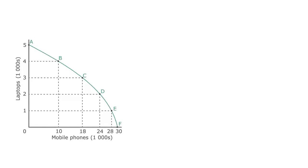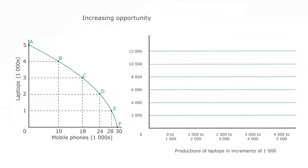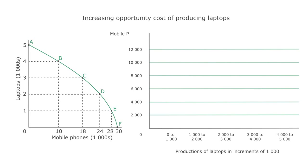If you take a closer look at the opportunity cost of producing laptops, what you will notice is that the opportunity cost increases as more laptops are produced. The opportunity cost of increasing the production of laptops from zero to one thousand is two thousand mobile phones. As the production of laptops continues to increase, more and more resources are allocated away from the production of mobile phones.